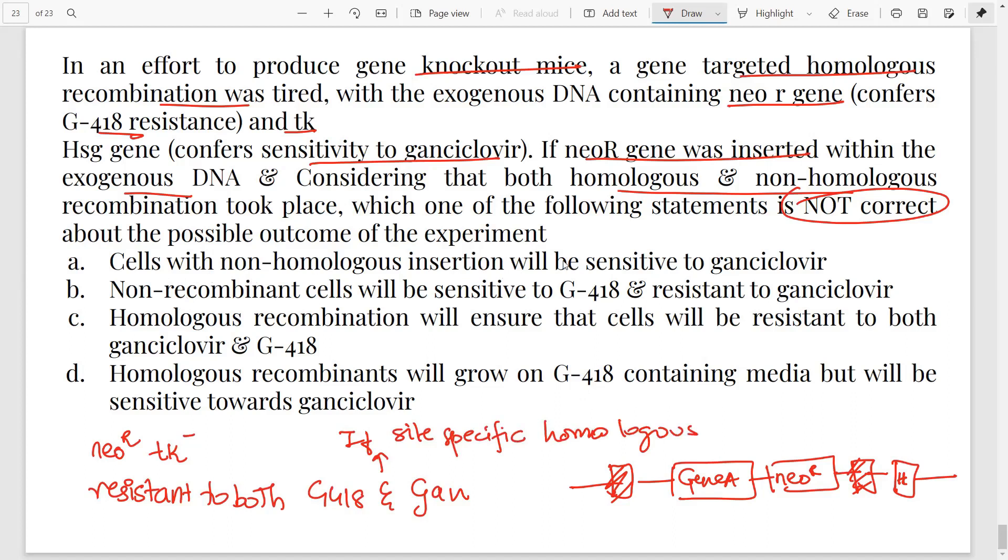So let's see the first statement. Cells with non-homologous insertion will be sensitive to ganciclovir. Correct. If there is non-homologous insertion, that means it is outside these genes, so TK will go in. If TK goes in, the cell will be sensitive to ganciclovir. So this is actually a correct statement. Non-recombinant cells will be sensitive to G418 and ganciclovir. Yes, if the cell has not undergone any type of recombination, then there will be no neomycin resistance gene at all. So this is also correct.